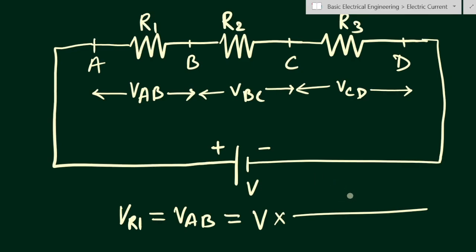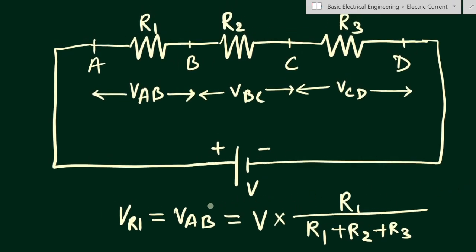V_R1 means the voltage drop across resistance R1, so we put R1 in the numerator. For the denominator, we add all resistances: R1 plus R2 plus R3. So this is the voltage divider rule — to find the voltage across any resistance, multiply the source voltage by the target resistance and divide by the total equivalent resistance of the circuit. This is applicable for a series connection.